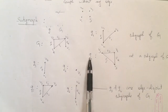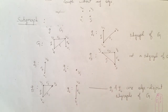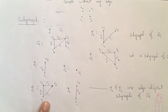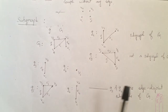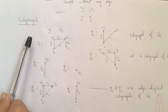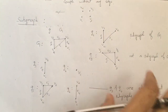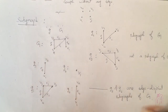Two subgraphs of a graph are said to be edge disjoint if they don't have any common edges. Suppose G5 has edges e1, e2, e3 and G6 has edge e4 — they don't have any edges in common, therefore G5 and G6 are edge disjoint subgraphs of graph G. Note that every graph is its own subgraph, and any single edge or single vertex is also a subgraph of the main graph.